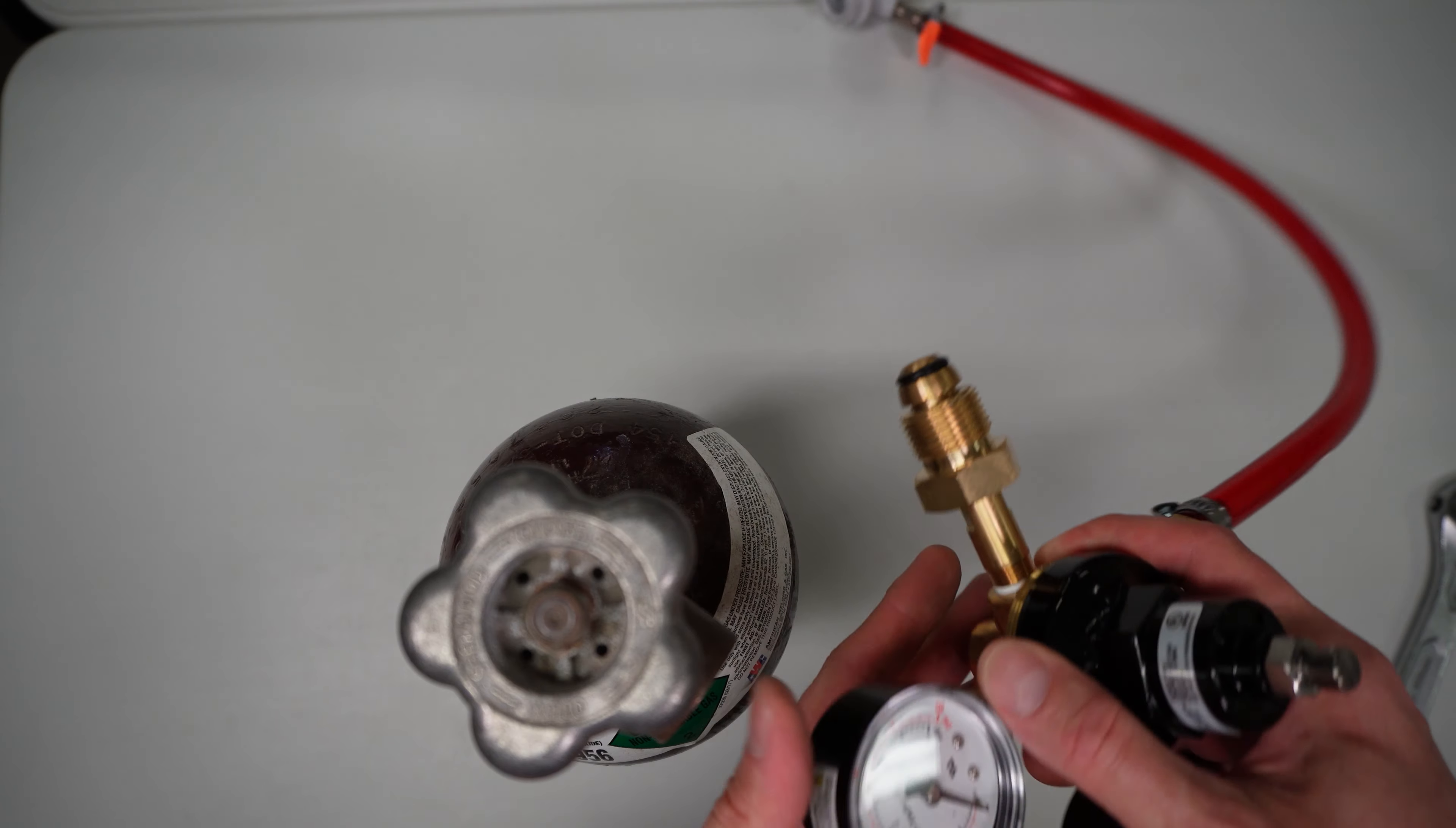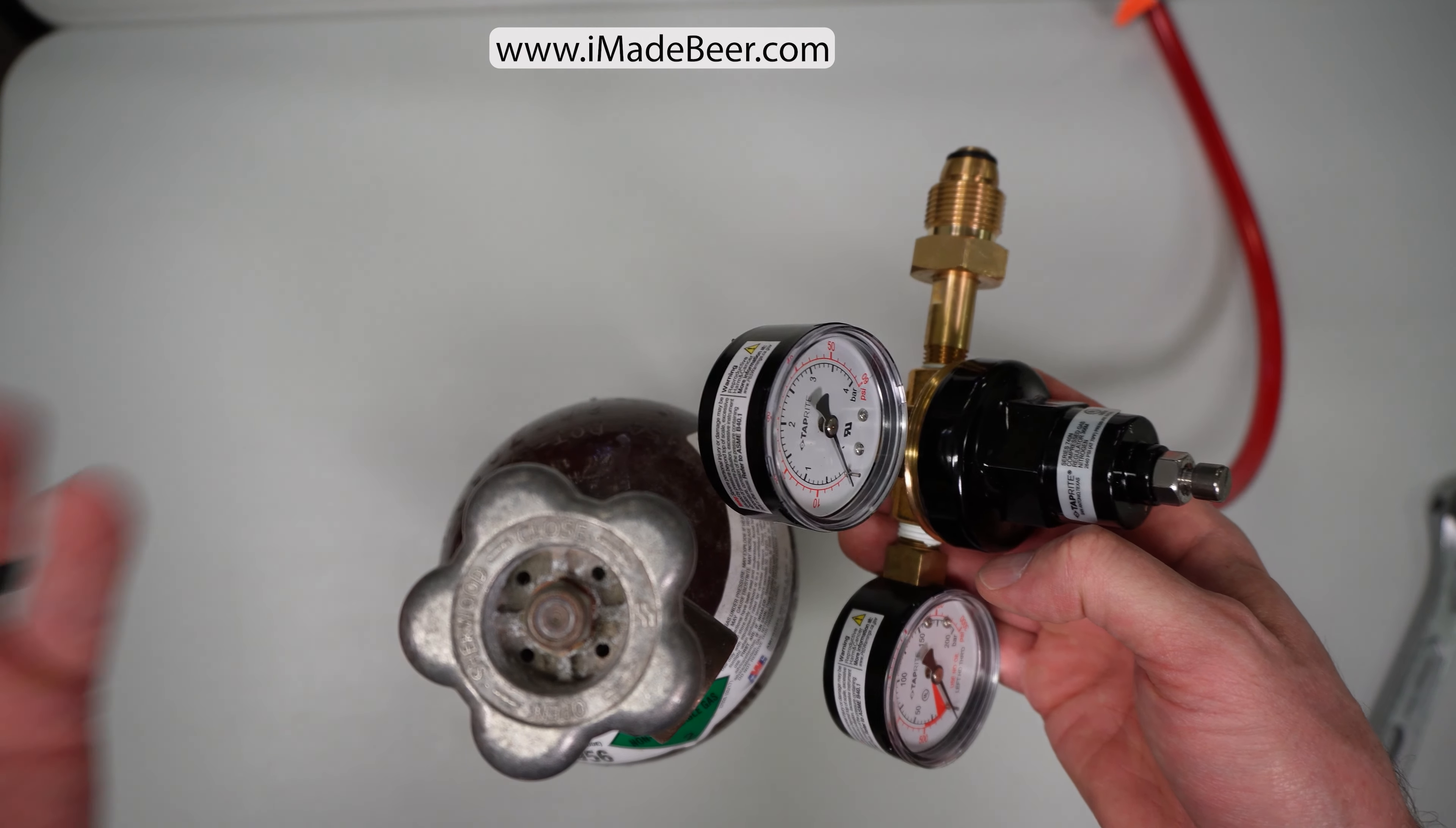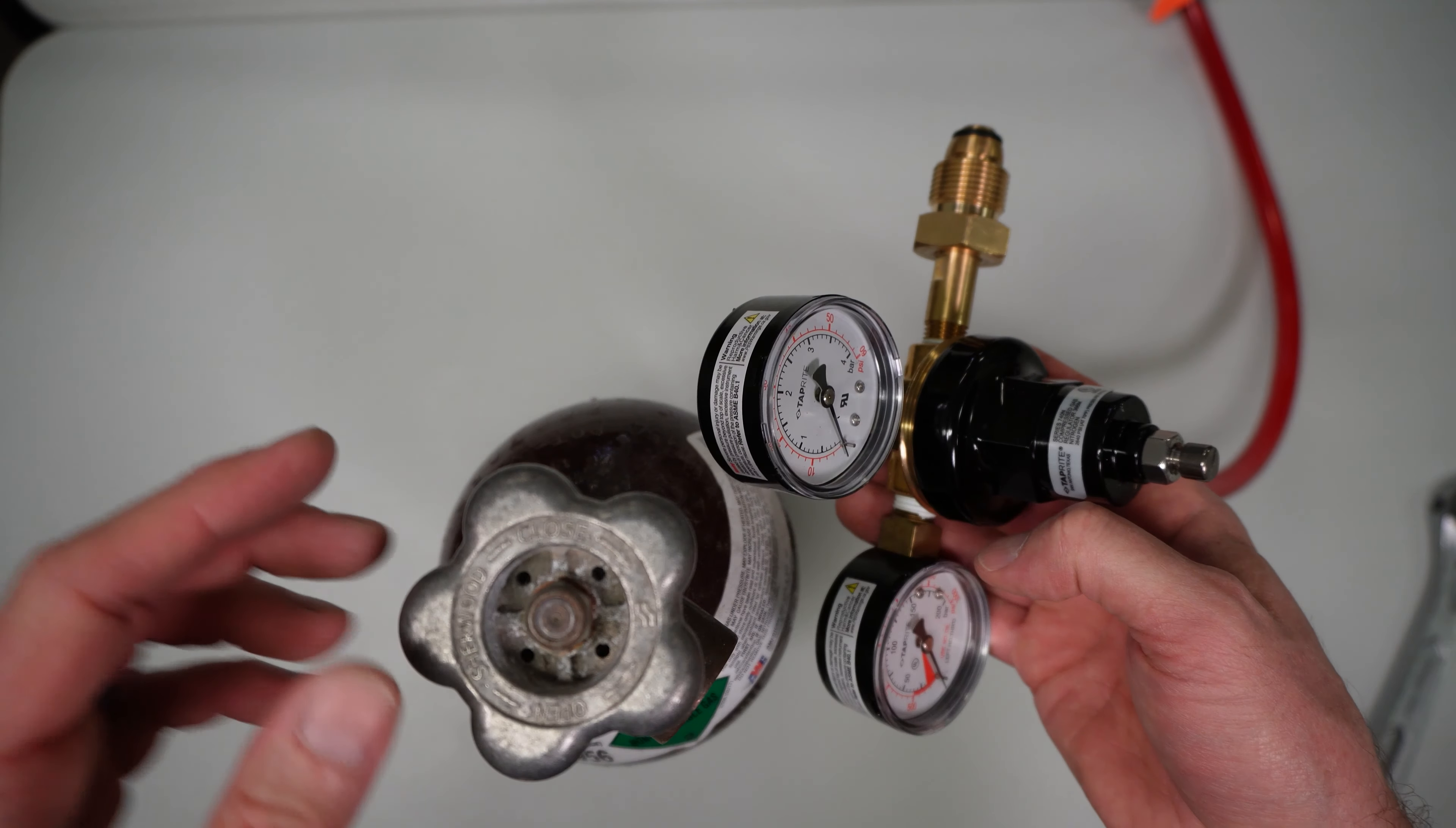This regulator works magnificently, but it's about $120, which by the way you can purchase at imadebeer.com. Or you could stop into the shop in Terre Haute, Indiana and come pick one up. They're right over there on the shelf.